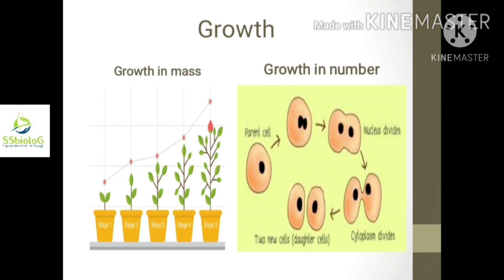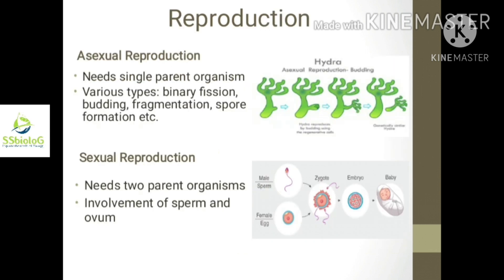Unicellular organisms grow in number by cell division, which is also a part of their reproduction. The second character is reproduction — the process by which an organism produces an individual mostly like its own.